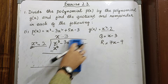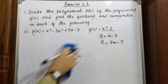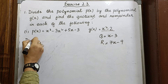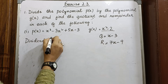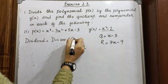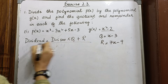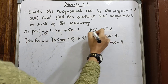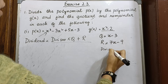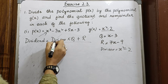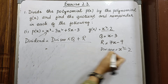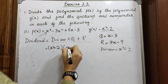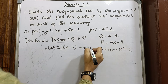To verify the answer, we use: dividend equals divisor into quotient plus remainder. The divisor is x² minus 2, the quotient is x minus 3, and the remainder is 7x minus 9. Let's check that this gives back the original dividend.